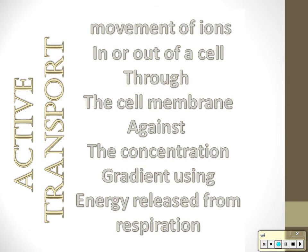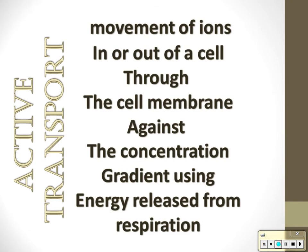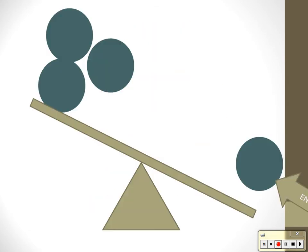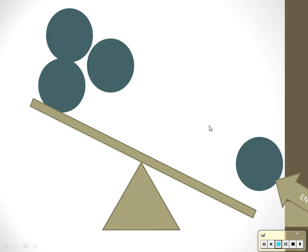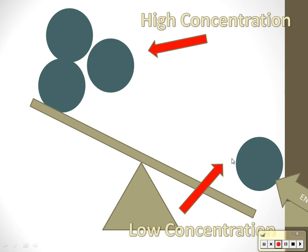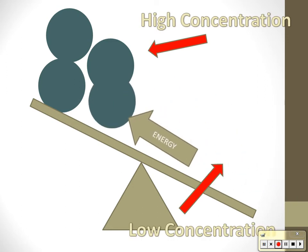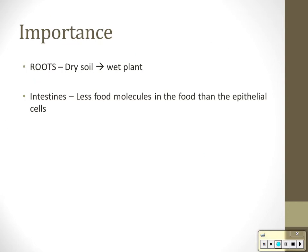Lastly, it's active transport. Active transport is the movement of molecules in or out of a cell through a membrane against the concentration gradient. Normally the ball should roll down the hill, but if I'm doing active transport, I push the ball up the hill. And that requires energy released from respiration.